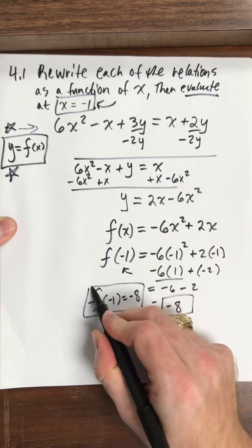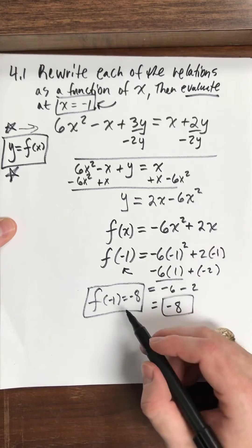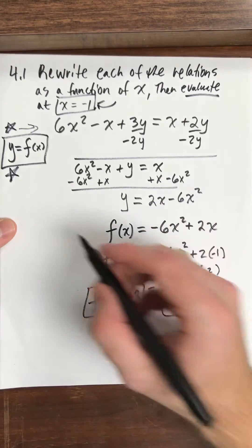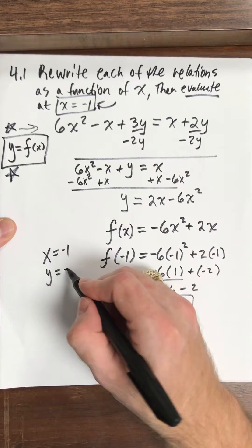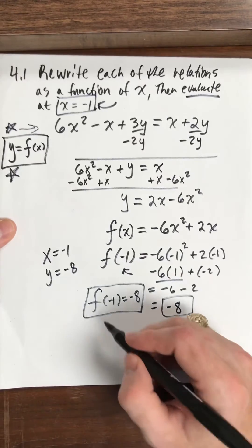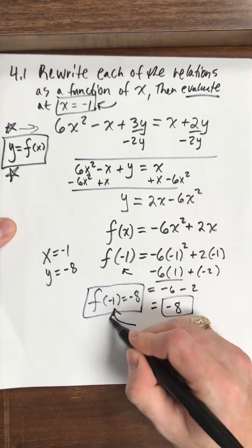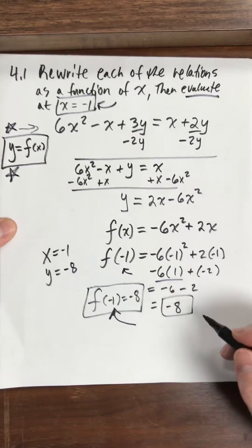The reason I like this function notation more than x equal, you know, negative 1, y equal, well we figured that out though, is negative 8, is because this gives me more information than just saying x equals this number.